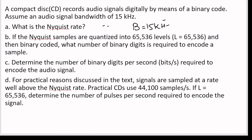B is the bandwidth of the message signal, which in this case is an audio signal. The question asks: what is the Nyquist rate? If the Nyquist samples are quantized into 65536 levels — L equals 65536 — and then binary coded, what number of binary digits is required to encode a sample? Part C asks for the number of binary digits per second, i.e., bits per second, required to encode the audio signal. Part D: for practical reasons, signals are sampled well above the Nyquist rate; practical CDs use 44,100 samples per second with L equal to 65536 — determine the number of pulses per second required to encode the signal.